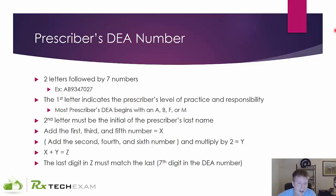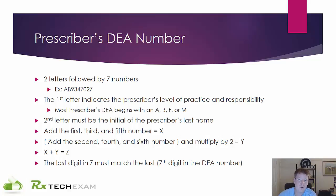The first letter indicates the prescriber's level of practice and responsibility. It's not to say that A is the highest level or anything like that — it's just a class of people that deal with medications. Pharmacies have DEA numbers; I think they typically begin with a K. Most prescriber DEA numbers that you'll be dealing with on a day-to-day basis either begin with an A, a B, an F, or an M as in Mary.